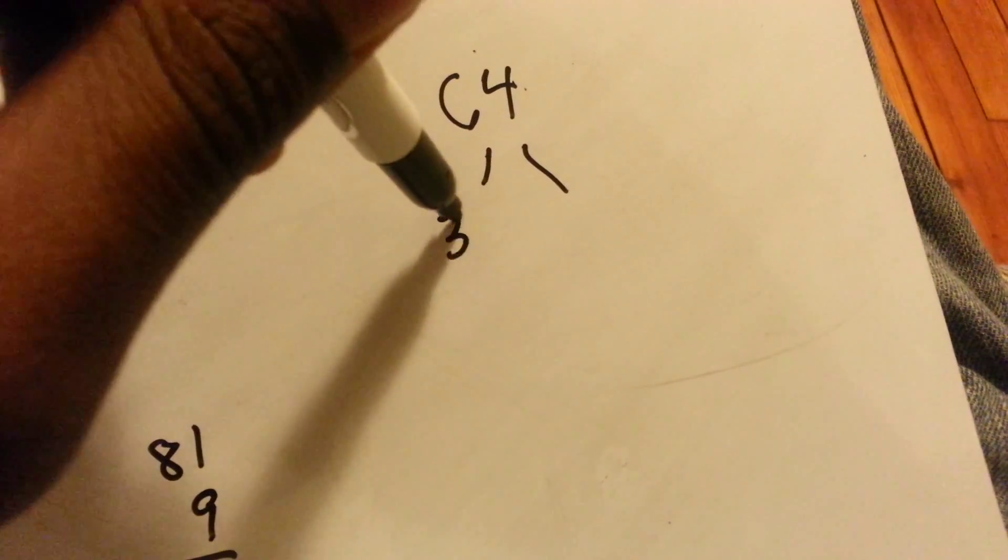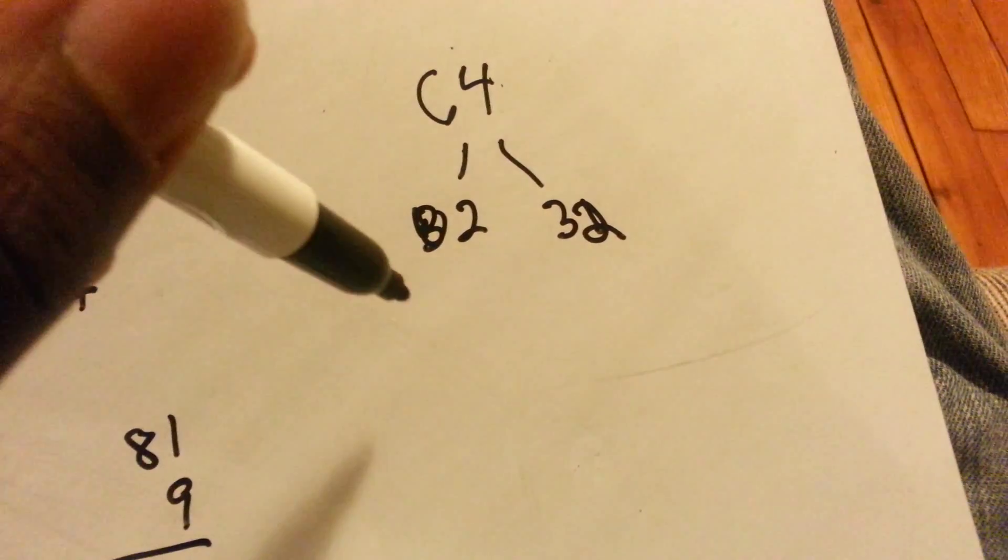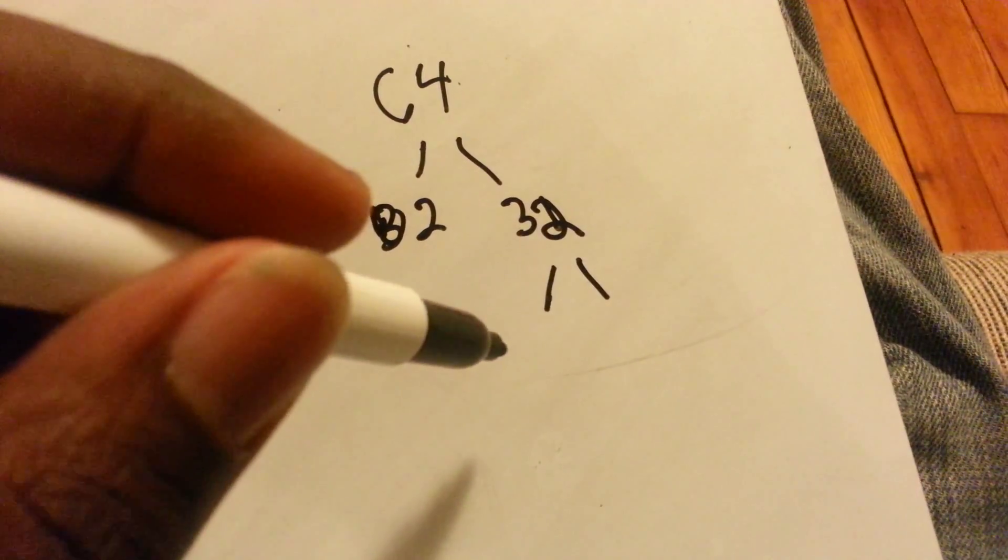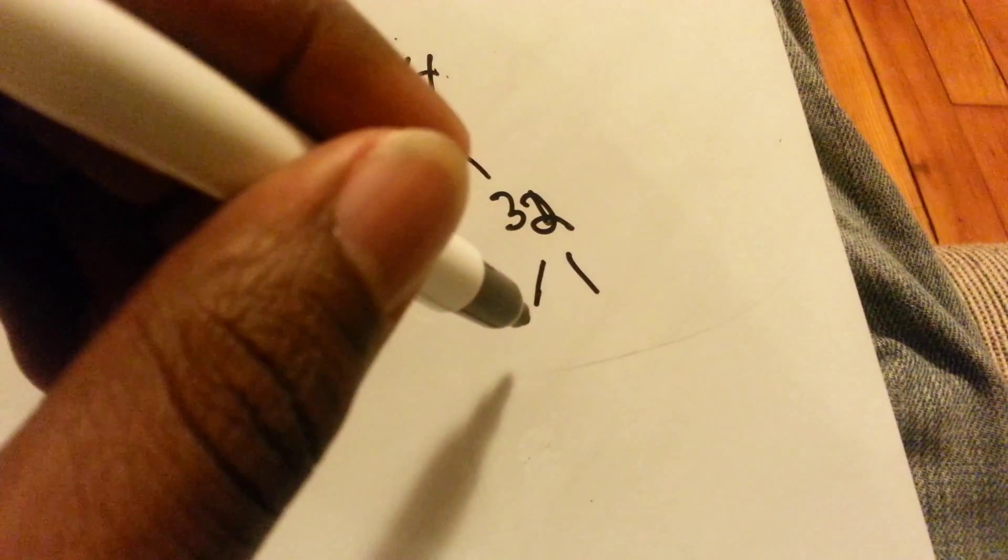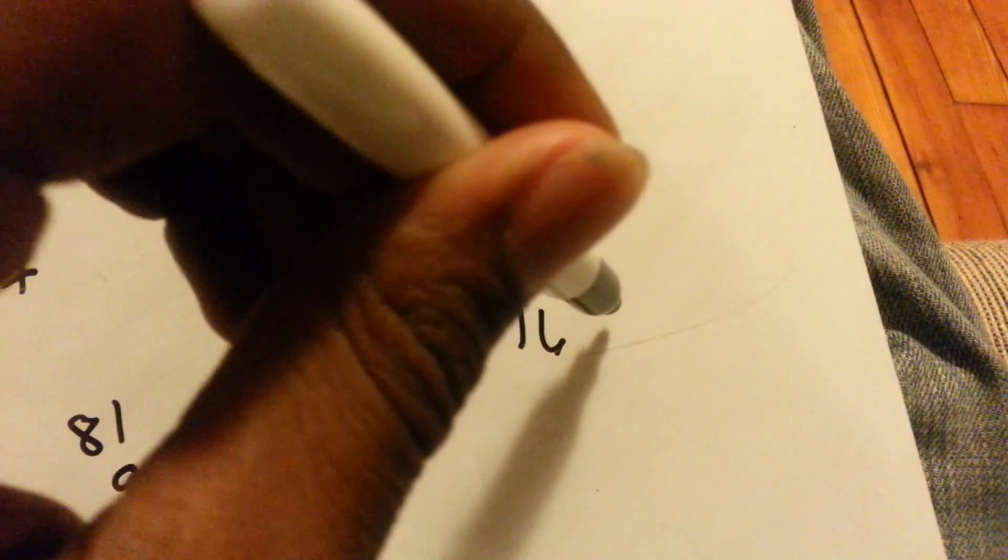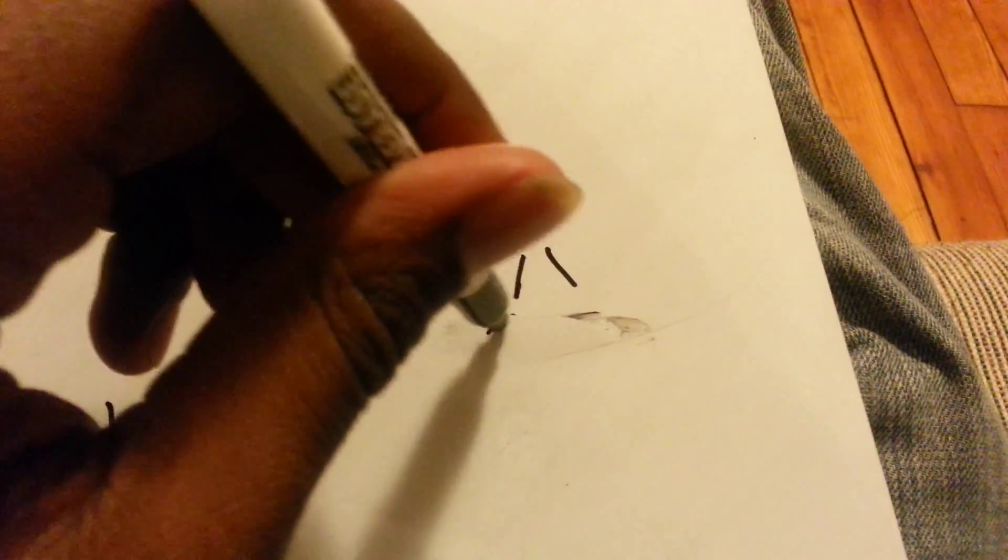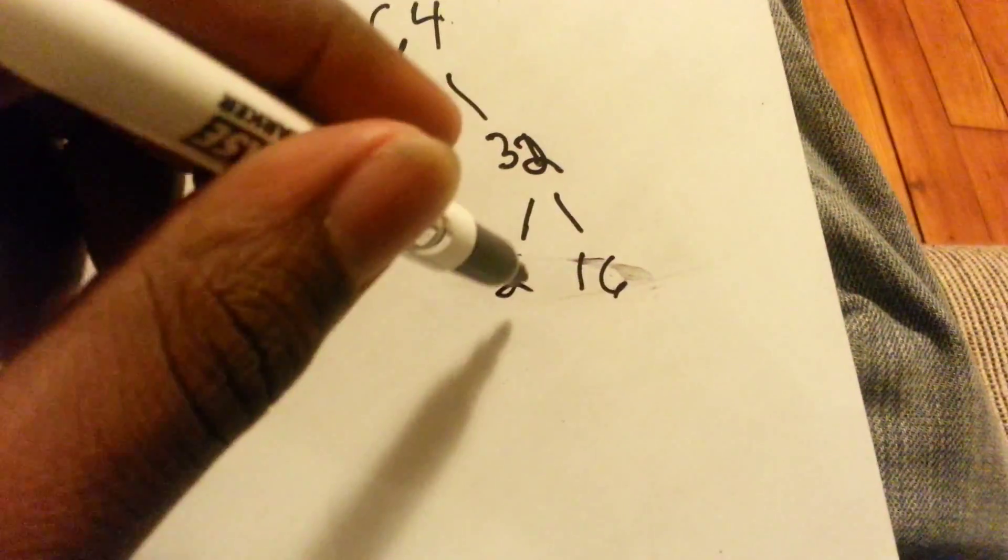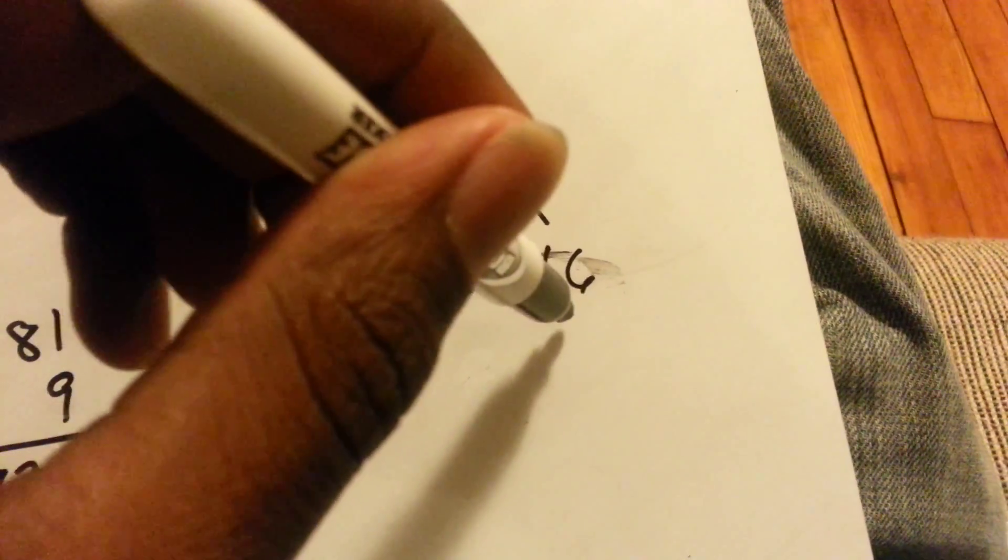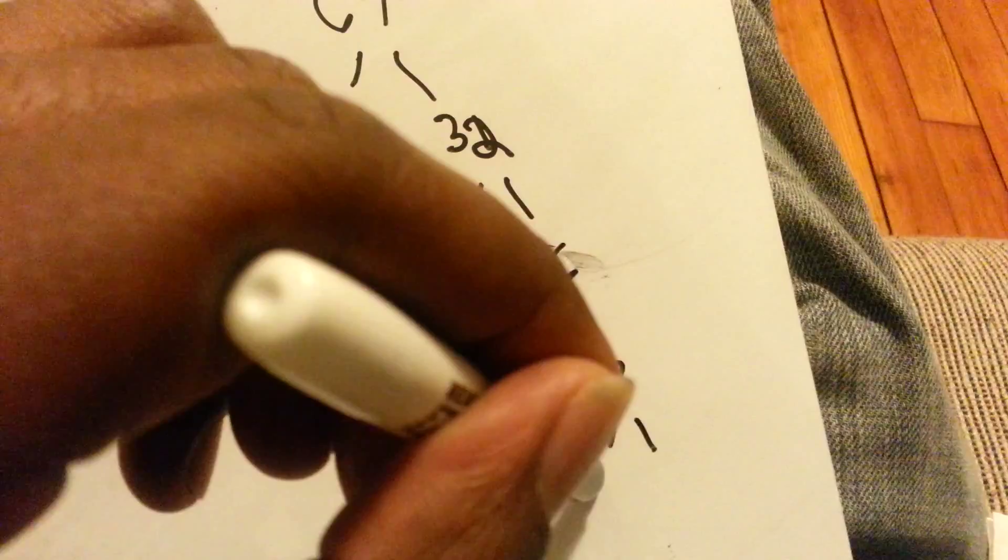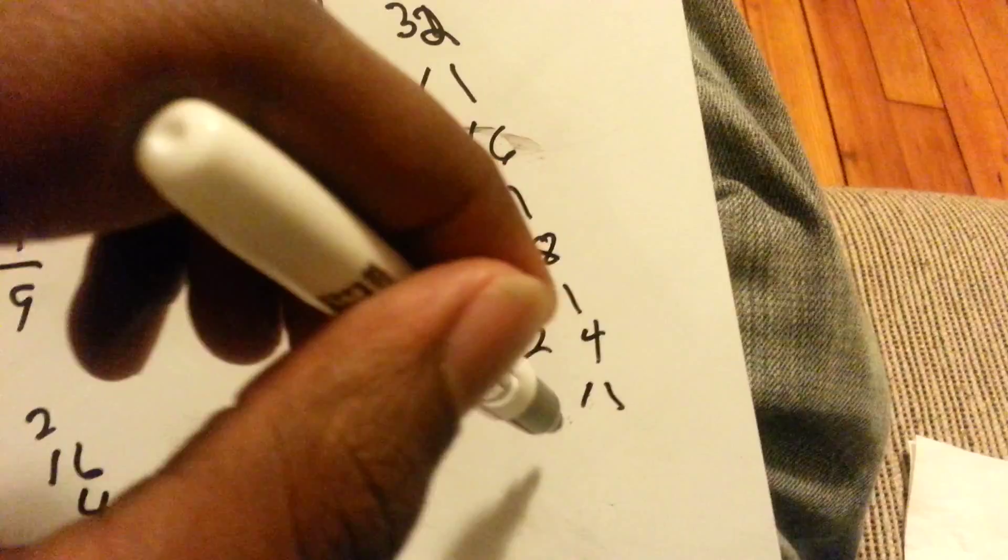So let's do two times 32. And two can't be divided anymore. So then we do 32 divided by two, which would be 16. Two on the other side. Two can't be divided anymore. So we can do 16. Two times eight is 16. Eight is two times four. Four is two times two.